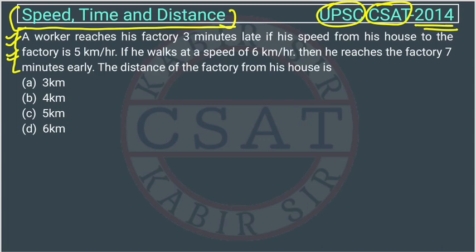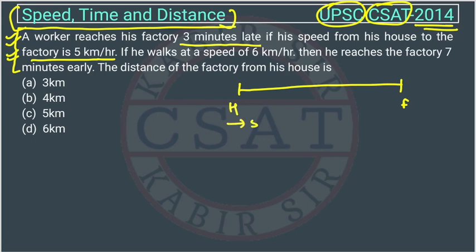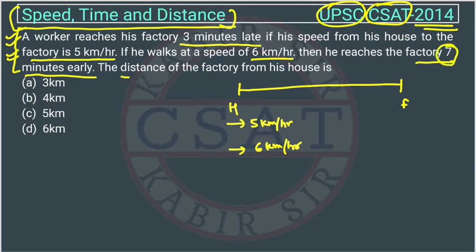A worker reaches his factory 3 minutes late if his speed from his house to the factory is 5 km per hour. The worker is going from home to factory at 5 km per hour and is taking 3 minutes late. If he walks at a speed of 6 km per hour, he reaches the factory 7 minutes early. The question asks for the distance of the factory from the house.